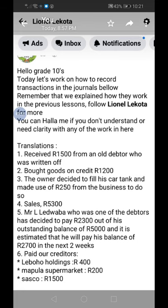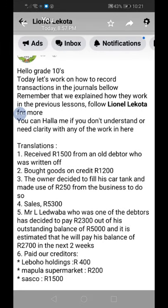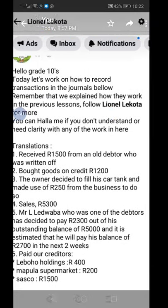Number six: paid our creditors — when we talk of paying, we're referring to the CPJ. That's why under the CPJ we have the name of the payee — the people we are paying. The names of the payees will be Lego Holdings, Popular Supermarket, and Sasco, and we record the amounts accordingly.